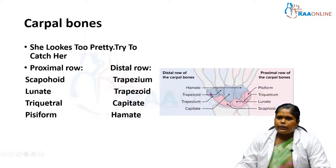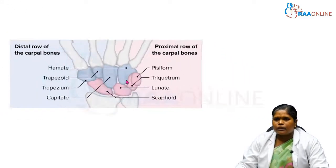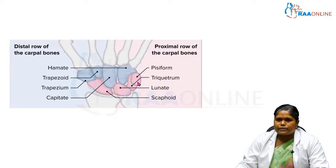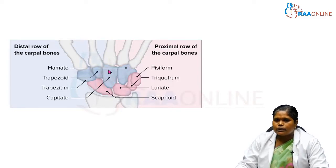There are 8 carpal bones arranged in 2 rows. The proximal row consists of 4 bones: from lateral to medial these are scaphoid, lunate, triquetrum, and pisiform. The distal row also has 4 bones arranged towards the hand.